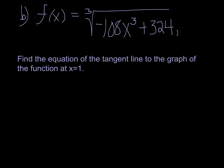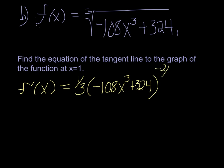Alright, well, since they didn't give us a point this time we have more work to do. So, as usual, we want to start by finding the derivative. So, of course, the cube root would be the same to the one-third power, so it's one-third of negative 108x cubed plus 324 to the negative two-thirds. And we need to use a chain rule here because the inside derivative is something other than one.